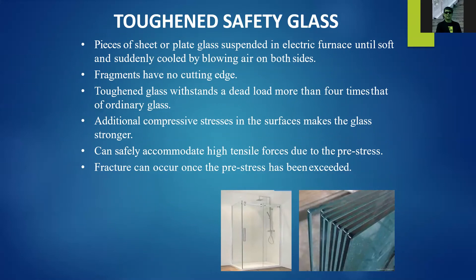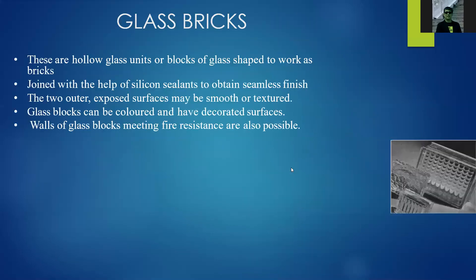Toughened safety glass consists of sheet or plate glass heated in an electric furnace until soft, then suddenly cooled by blowing air on both sides. It can withstand dead load more than four times that of ordinary glass. Additional compressive strength on the surface makes it stronger and it can safely accommodate high tensile force due to pre-stress. Fracture can occur once the pre-stress is exceeded. This type of glass is commonly used for doors, toilet partitions, and shower partitions.